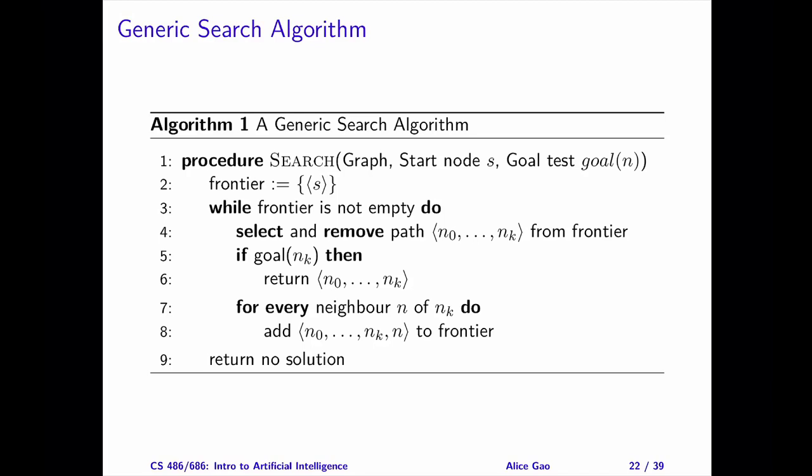Let's take a look at the generic search algorithm. We can use the generic search algorithm as a blueprint to create all kinds of search algorithms. Initially, the frontier contains one path consisting of the initial state only. We will continue exploring the space as long as the frontier is not empty. At each step, we select and remove one path from the frontier. If the last node on the path is a goal node, we can return the path as a solution.